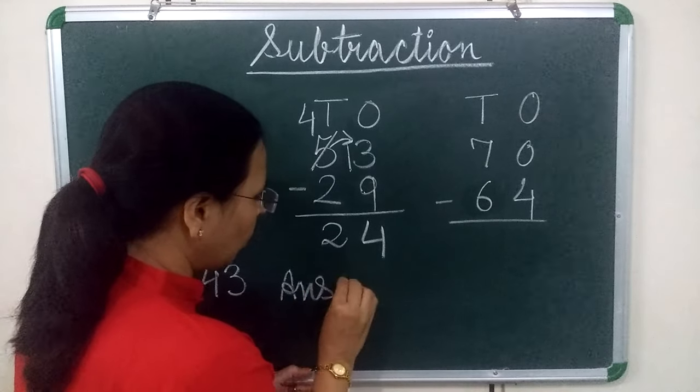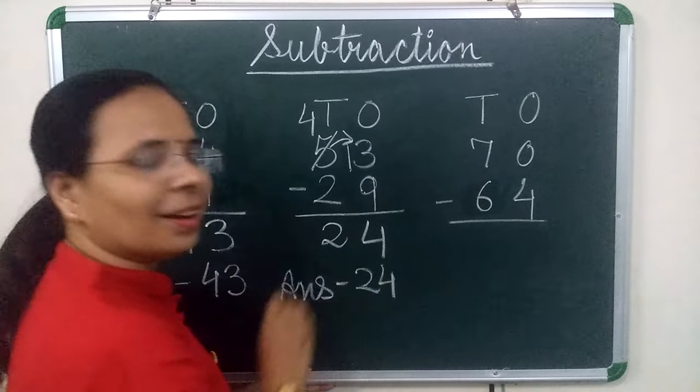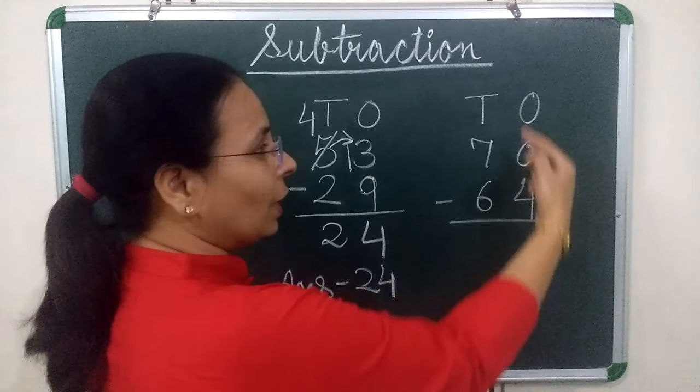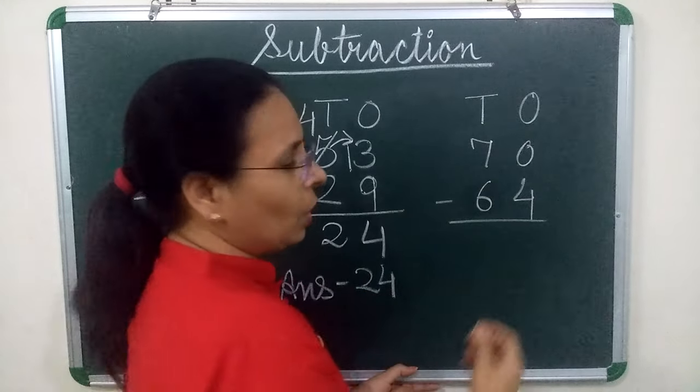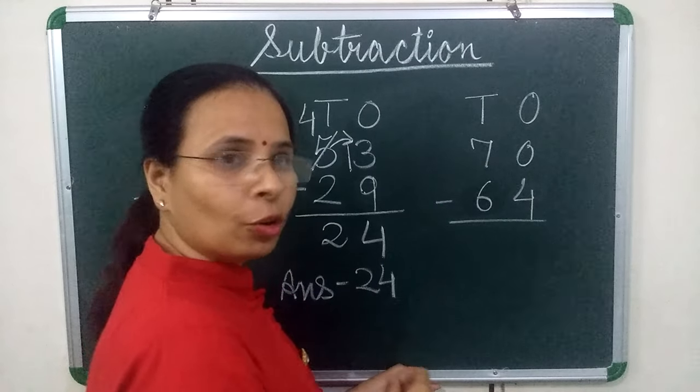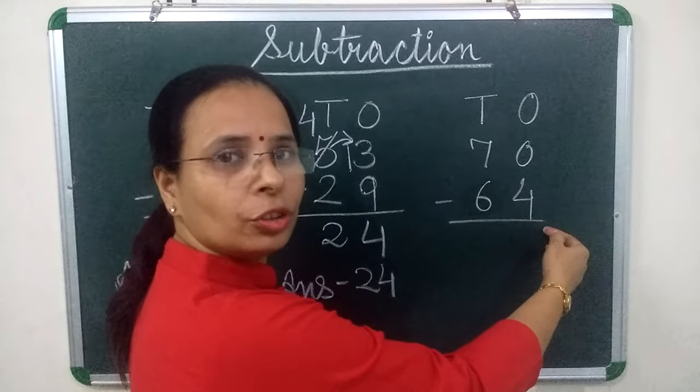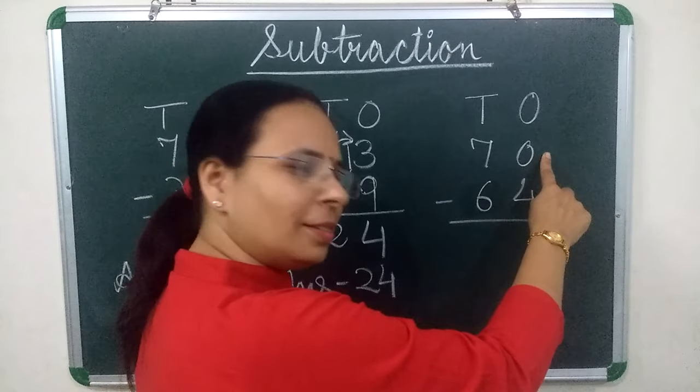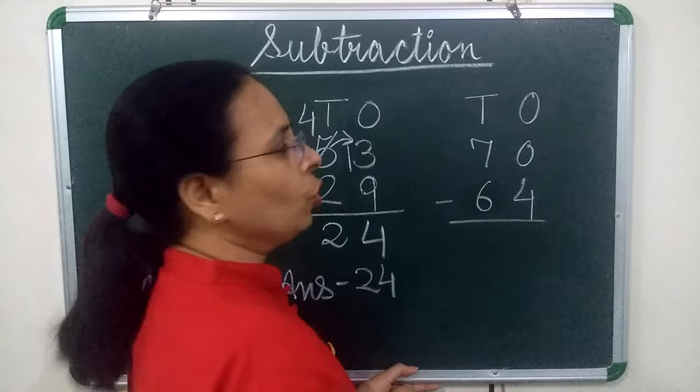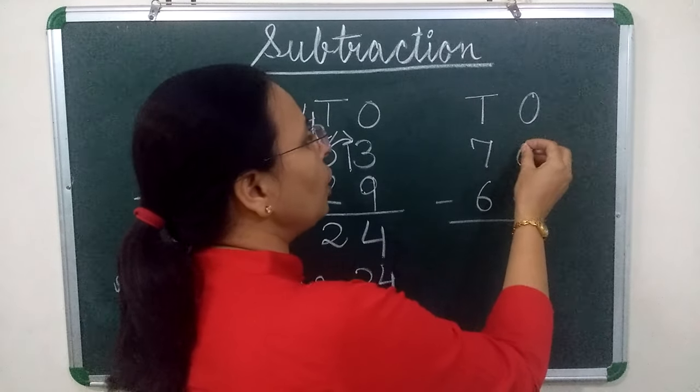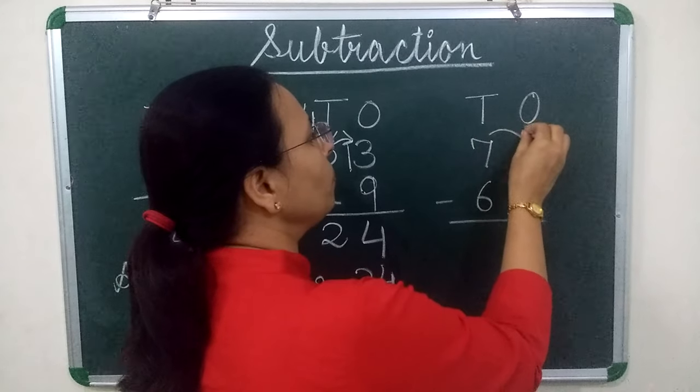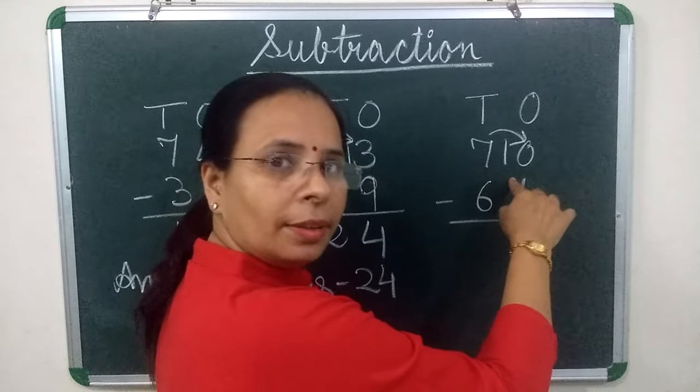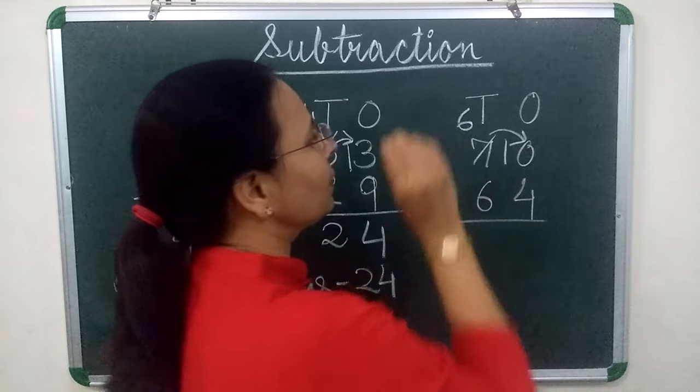Children, 24 is our answer. Now we will move to third question. Now here at 1's place, first number is 0, second number is 4. You remember now from where we have to start? From 1's place and 1's place first number is 0 and second number is 4. So what we will do? We will borrow 1 from 7. Now 0 becomes 10 and 7 becomes 6.